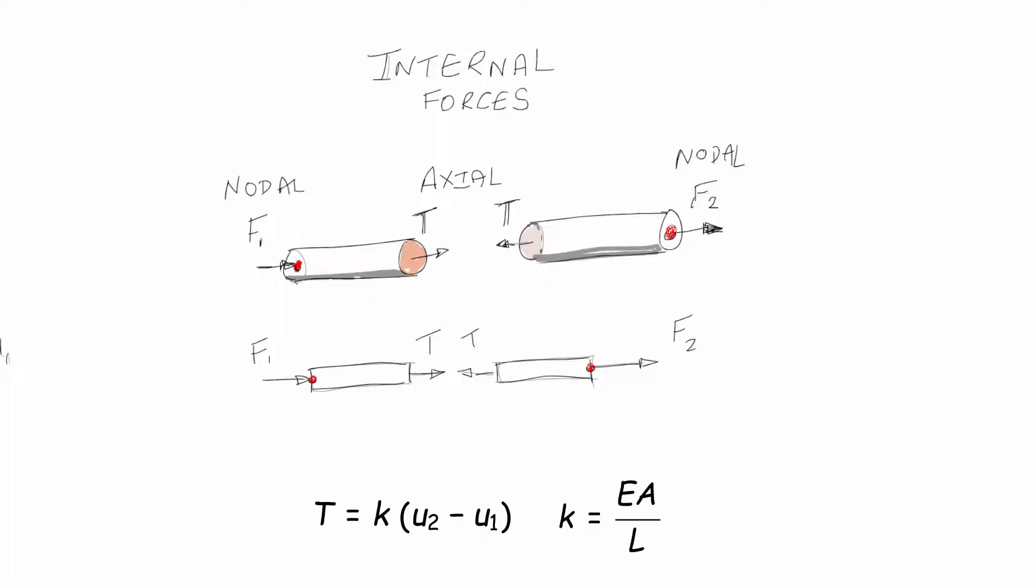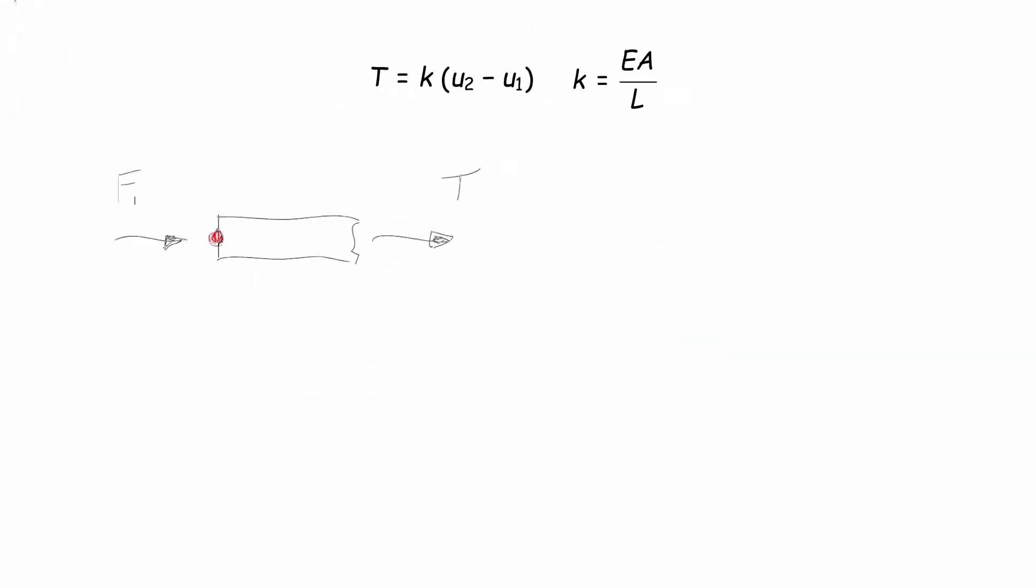Now we can do a force balance at each node. For the left-hand node, F1 plus T must balance to zero. For the right-hand node, F2 minus T must balance. If we substitute for T, then we can get a force balance at each end where the relative displacement is developing a pull in the spring against the nodal force.